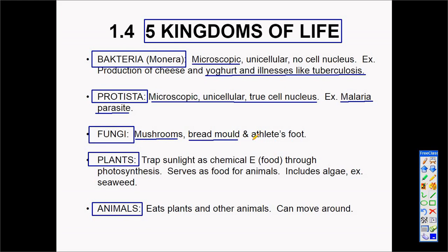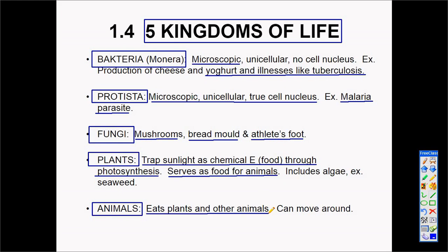Fungi include mushrooms that people eat, athlete's foot, and the mold that grows on bread if you leave it for a long time. Plants produce their own food and oxygen through photosynthesis; they serve as food for animals and include algae and seaweed – they are the only producers. Animals eat plants and other animals – carnivores, herbivores, and omnivores – and they can move freely.